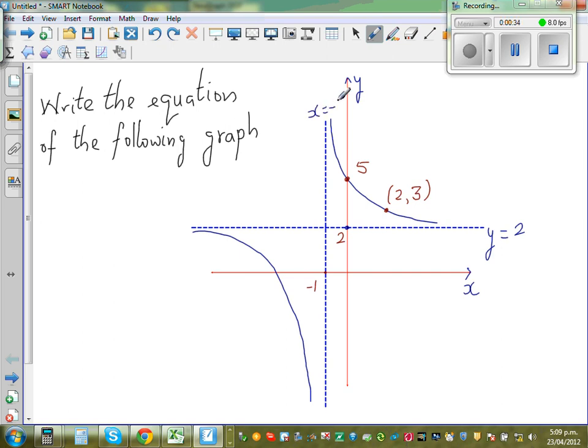Now I hope you know the general form of a hyperbola. So this is a hyperbola: y is equal to a over x plus or minus b plus or minus c.